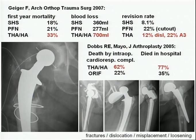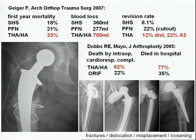Dobbs showed three times higher intraoperative complications with the arthroplasty group, and nearly double the patients died in hospital from that group. So arthroplasty may not be the best approach to fix these fractures. Additionally, you have postoperative complications such as fracture, dislocation, misplacement, and loosening — you can also put a stem in the wrong way.